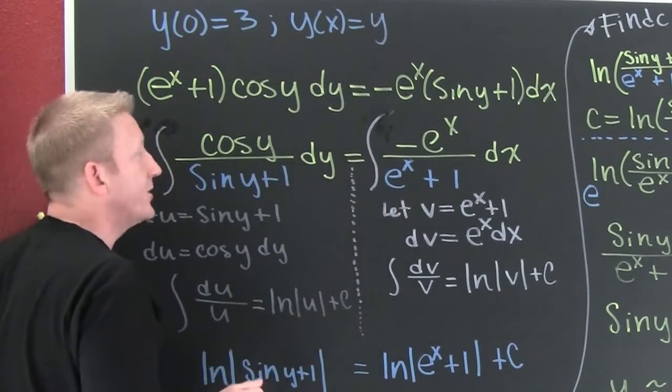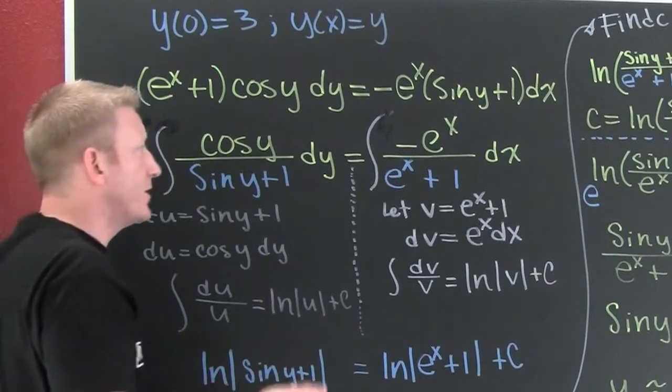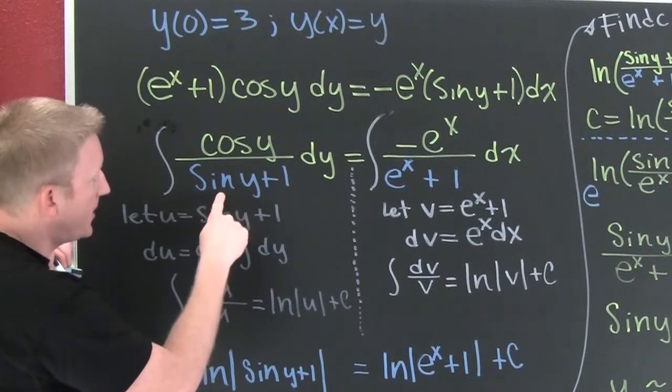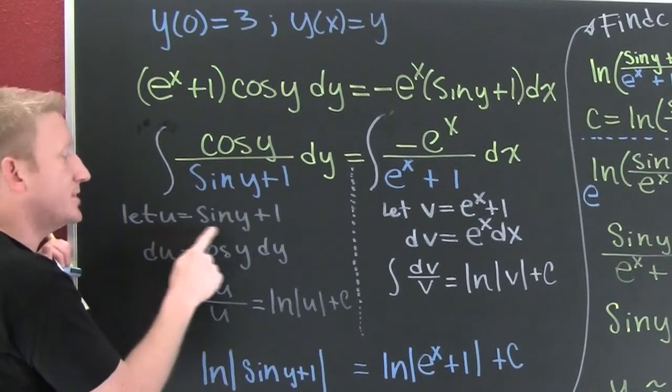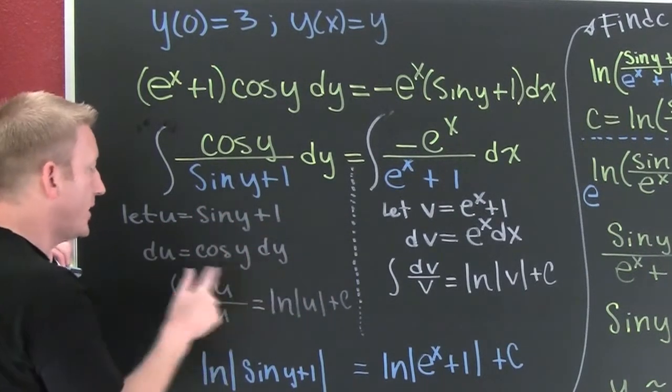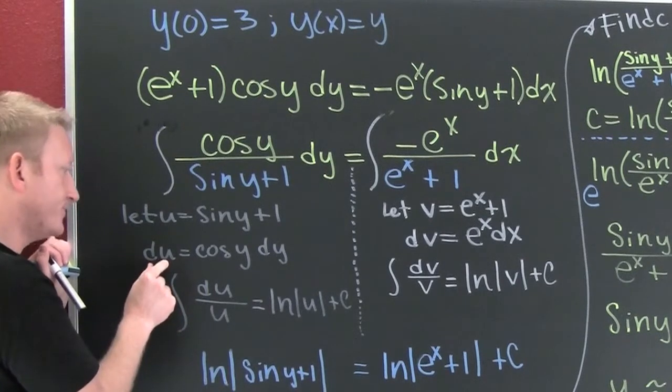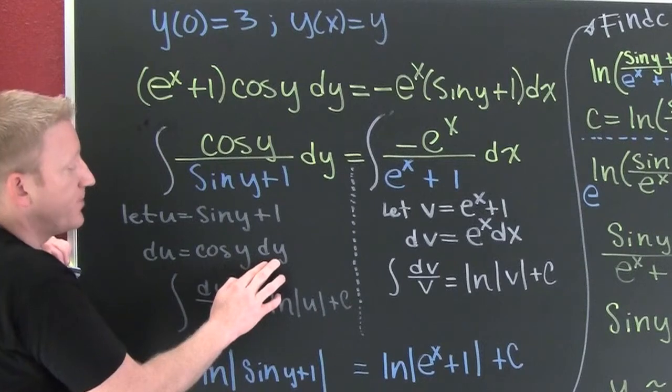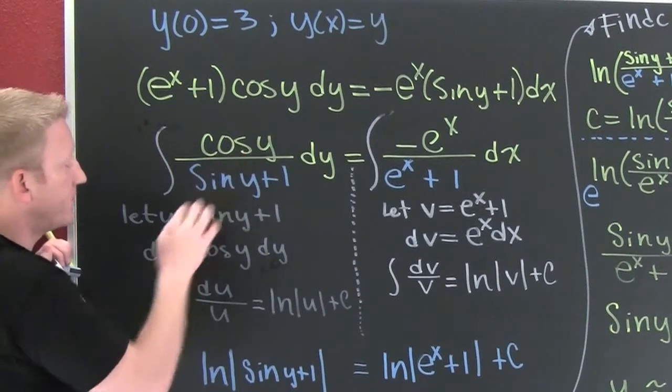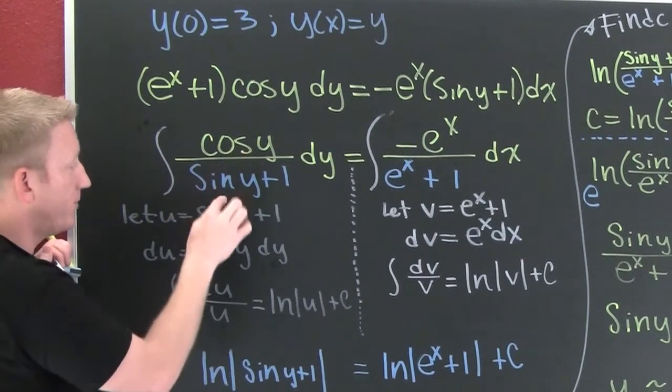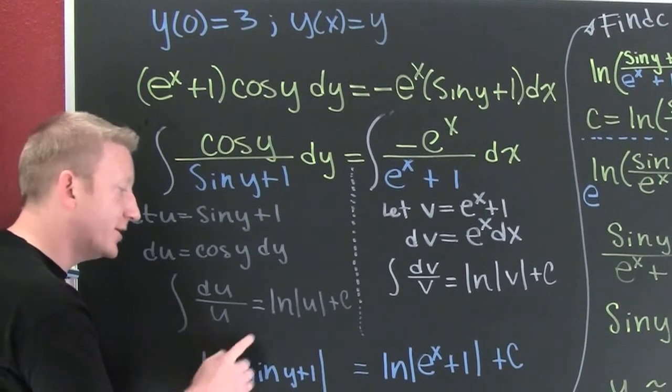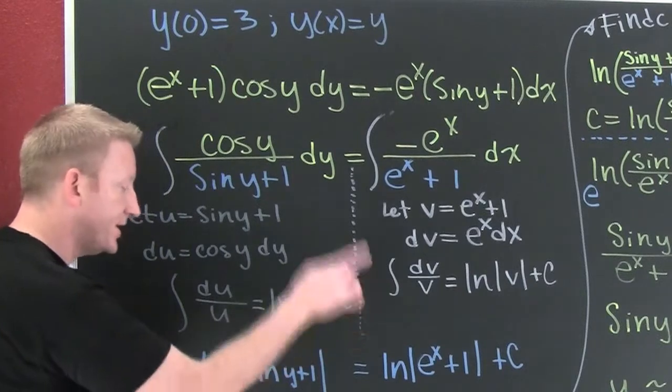So then we need to talk about how to integrate each one of those pieces. Each one is kind of like a u substitution. So what am I going to let u be? I'm going to let u be this denominator here. See, I said u is sine y plus 1. Now what? I take the derivative. So then du is the cosine of y dy. That allows me to make my substitution: my u up top, my du up top, and my u on the bottom. So how do we integrate du over u?